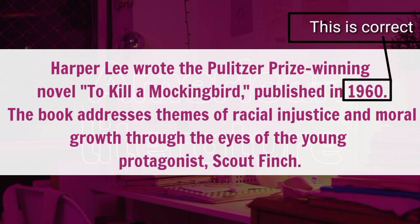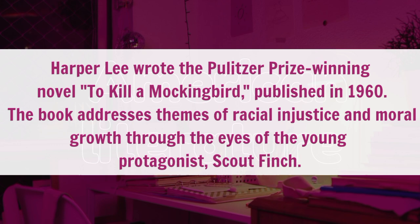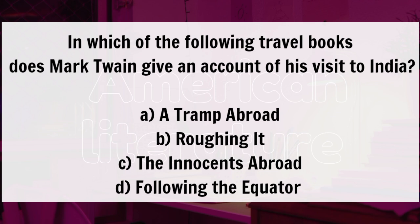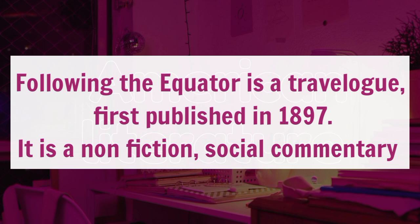Question 11: in which of the following travel books does Mark Twain give an account of his visit to India? Option A, A Tramp Abroad. B, Roughing It. C, The Innocents Abroad. D, Following the Equator. The correct answer is Option D. Following the Equator is a travelogue published by Mark Twain in 1897. It is a non-fictional social commentary.